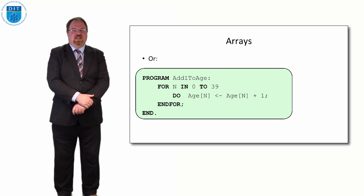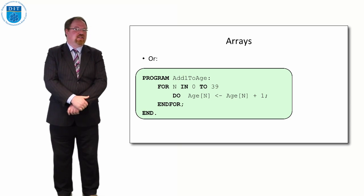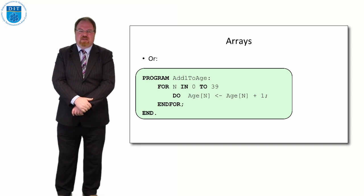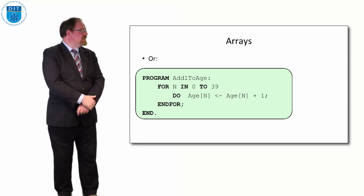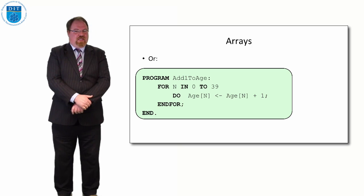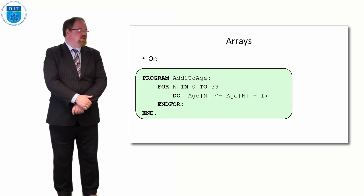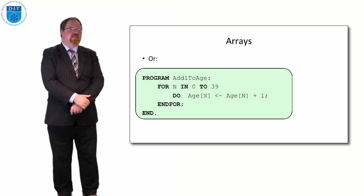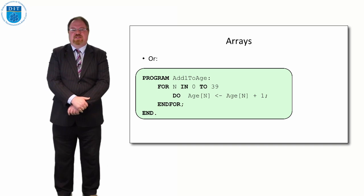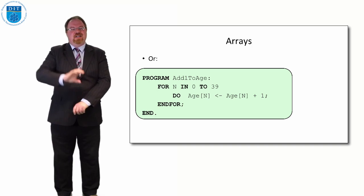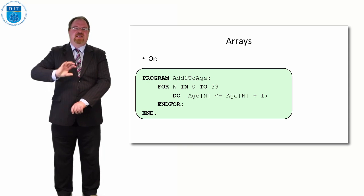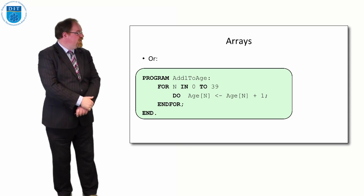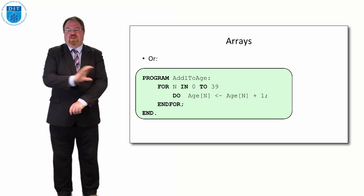We can also do this using a for loop — a slightly more compact way. We say: for n in the range 0 to 39, do age[n] = age[n]+1. When n is 0, age[0] gets age[0]+1; when n is 1, age[1] gets age[1]+1; and so on up to 39. When manipulating arrays, for loops are a very effective way of traversing each element.